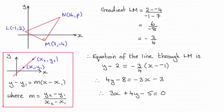Hi there. So we had to find the equation of the line passing through LM and write it in the form AX plus BY plus C equals 0.